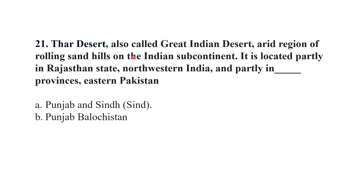The Thar Desert, also called the Great Indian Desert, is an arid region of rolling sand hills on the Indian subcontinent. It is located partly in Rajasthan state, northwestern India, and partly in the Punjab and Sindh regions of eastern Pakistan.